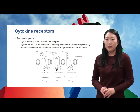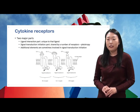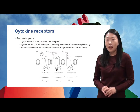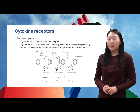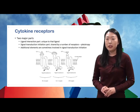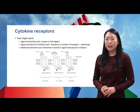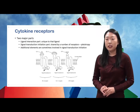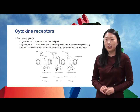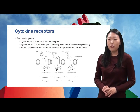Cytokine receptors are composed of two parts. One is the ligand interaction part, which has a unique structure specific to its cytokine. The other part is the signal transduction initiation part, which is often shared by various receptors. For signal transduction initiation, additional elements are sometimes involved.